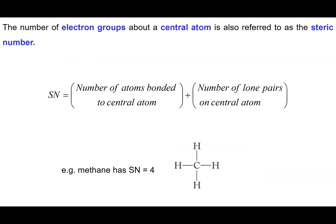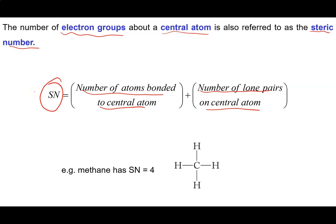Why is it important to know the number of electron groups? Because the number of electron groups around a central atom determines the shape of our molecule. This number is referred to as the steric number — it's the number of atoms bonded to the central atom plus the number of lone pairs on the central atom. We're going to see steric numbers up to six. For methane, there are four atoms bonded to the central atom and no lone pairs, giving a steric number of four.